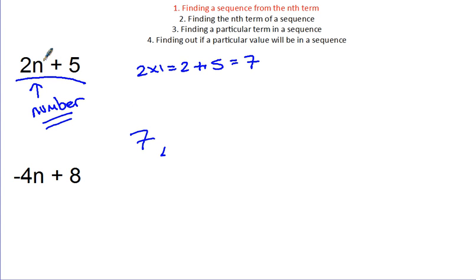For my 2nd term, I'm going to replace this n with the number 2. So, it's going to be 2 times 2, which is 4. Then I'm going to add on the 5, which gives me a 2nd term of 9.